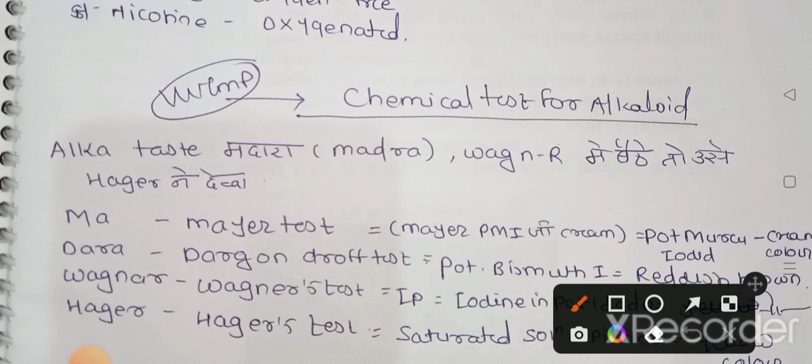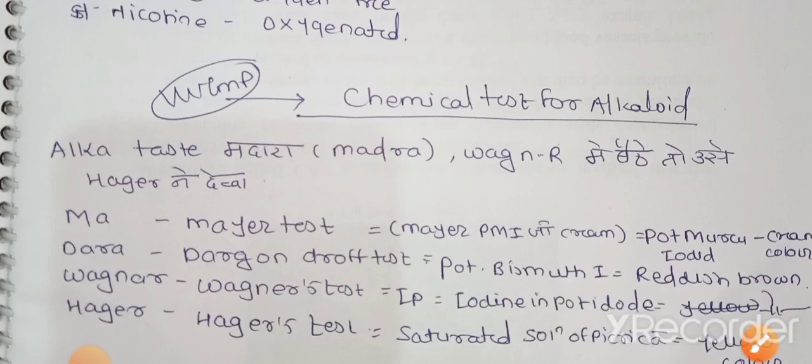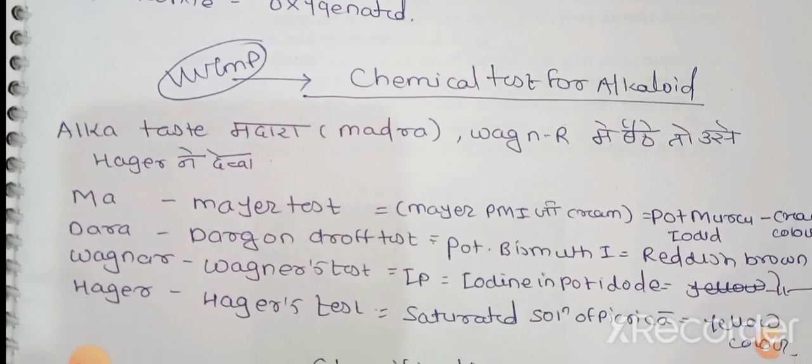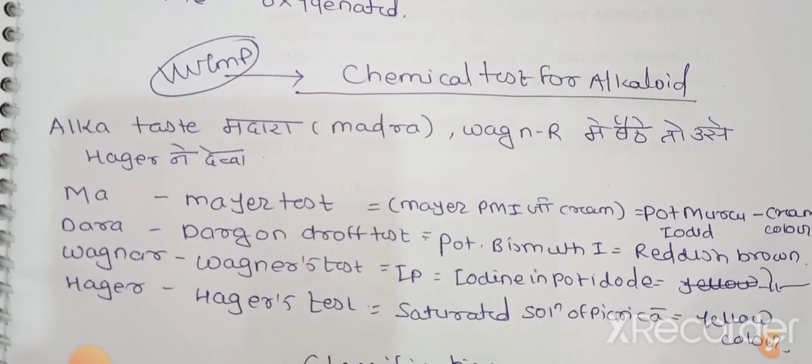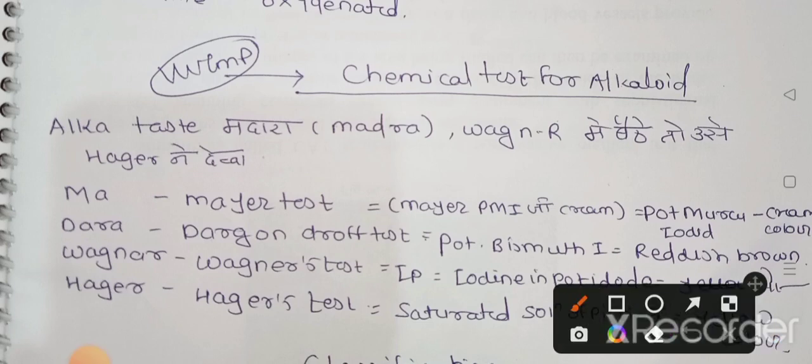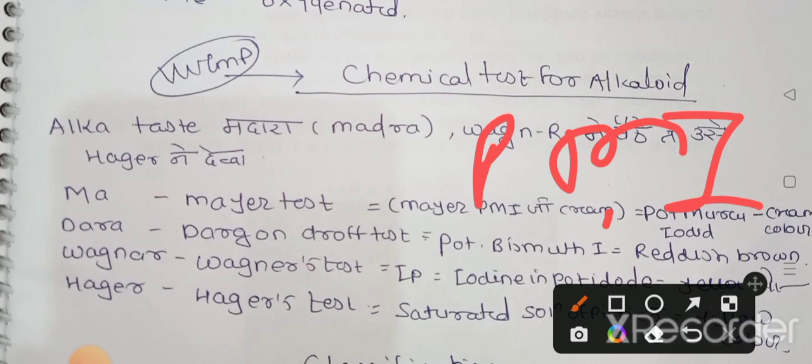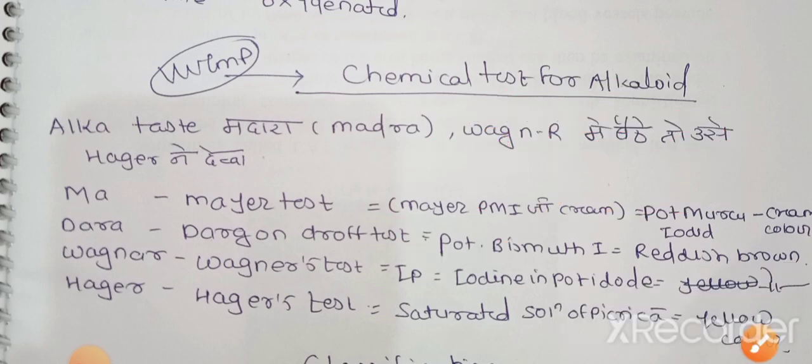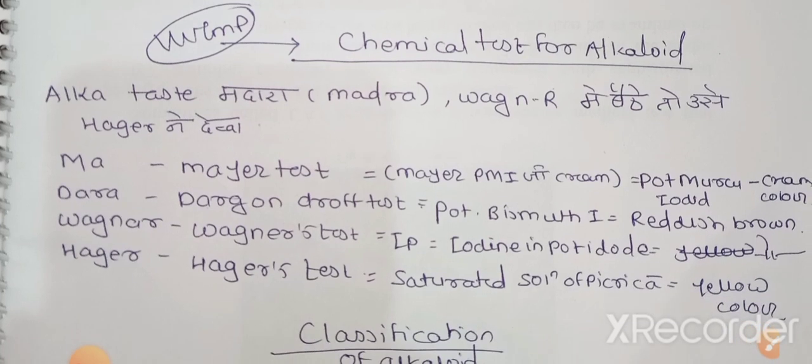The trick I told for alkali test was MADARA. From MA you get Meers test, from DRA you get Dragon drop test, from WAGNER you get Wagner's test, and from HAGER you get Hager's test. So first, Meers test - you should remember Meers sahab was feeding cream to Pammi. So from cream you remember the cream color, and from Pammi you can remember PMI, that is potassium mercuric iodide. This reagent is used in Meers test and gives cream color.